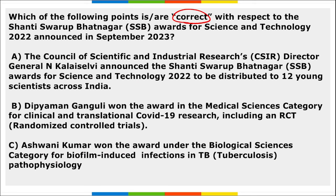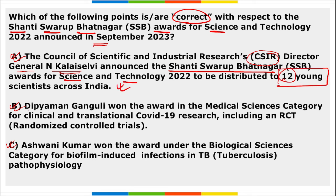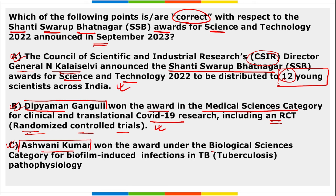Which of the following are correct with respect to the Shanti Swaroop Bhatnagar Award for Science and Technology announced in September? All three options are correctly mentioned. CSIR Director General announced Shanti Swaroop Bhatnagar Awards for Science and Technology to be distributed to 12 young individual scientists across India. Deepyaman Ganguly won the award in the medical science category for clinical and transitional COVID-19 research including an RCT (randomized control trial). Ashwini Kumar won the award under the biological science category for biofilm-induced infections in tuberculosis.